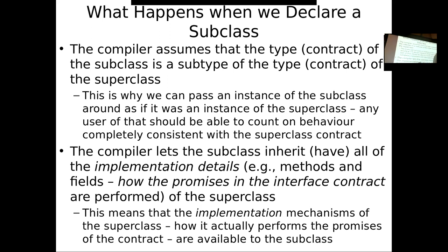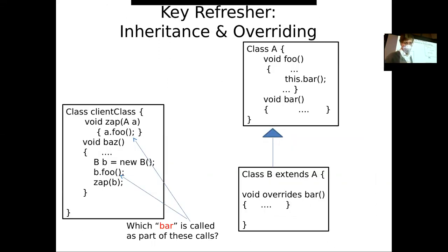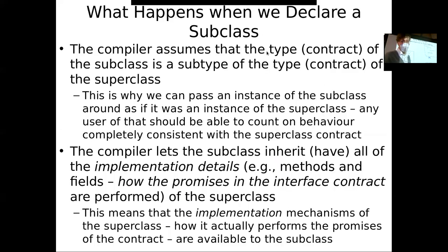Someone is using it as if it's an instance of a supertype without knowing that it's actually an instance of a subtype — maybe a subtype that didn't even exist when they wrote their code. So this lecture is about a different side of it. It's about the issue of implementation — not about promises, but about inheritance and implementation.